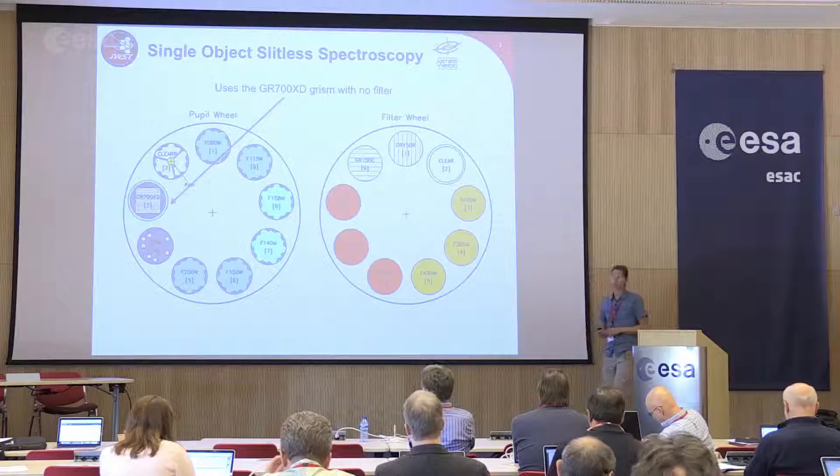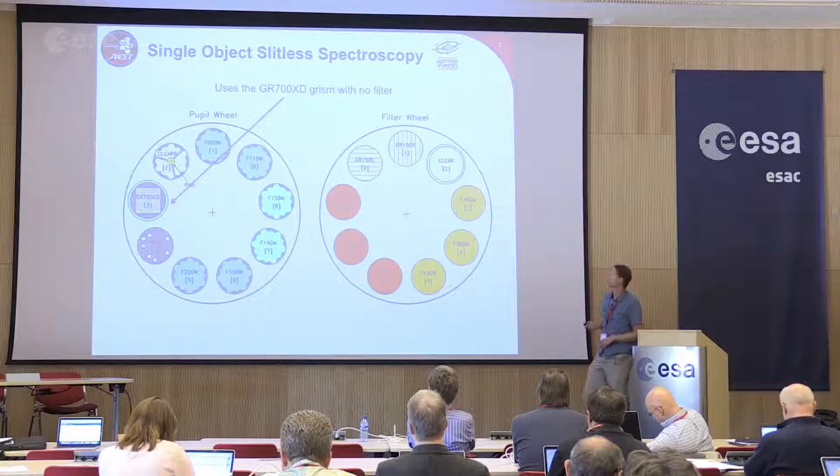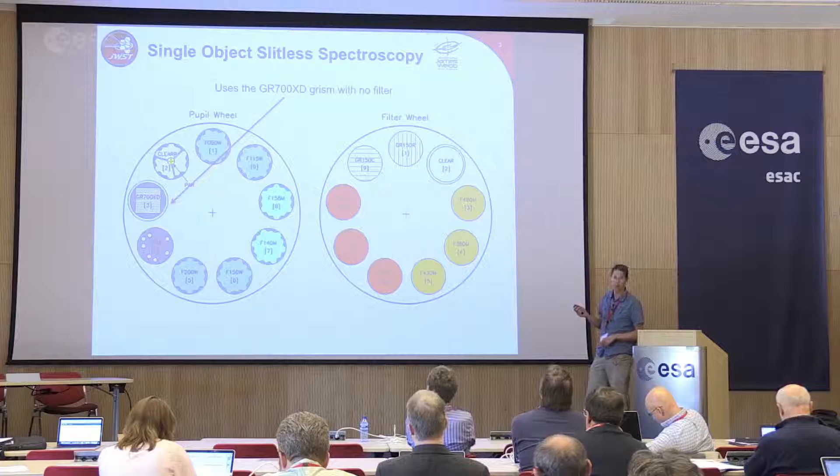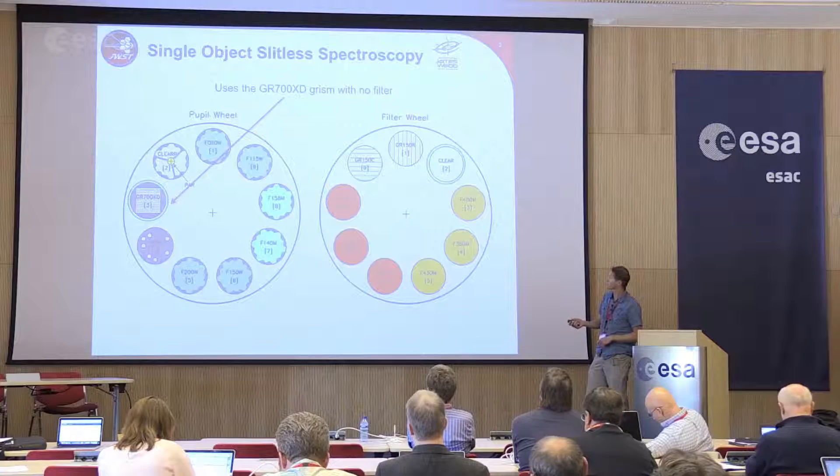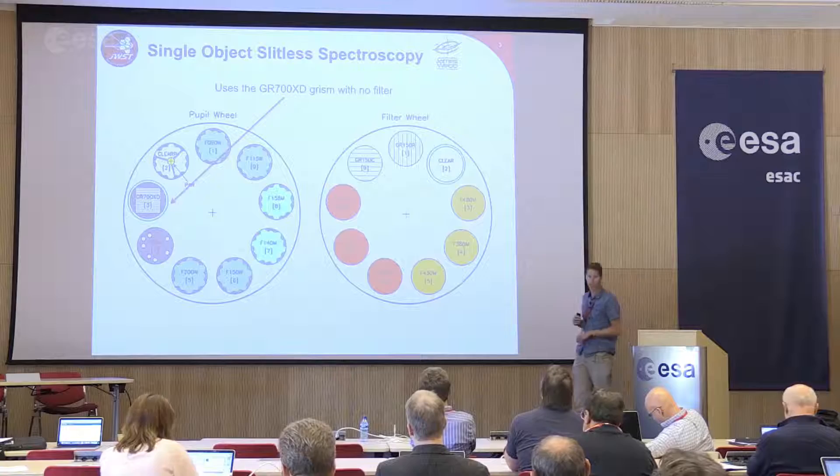Showing this diagram again — the third time you've seen it today — so you should all be familiar with NIRISS's wheels. In this case, simpler than before, we are using the grism, the GR700XD, where XD stands for cross dispersion. That's here in the pupil wheel, and we're using that with no filter at all, using the clear position in the filter wheel.